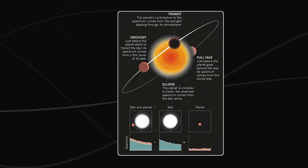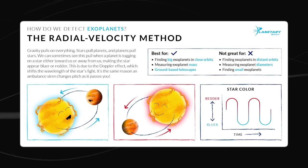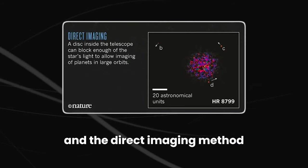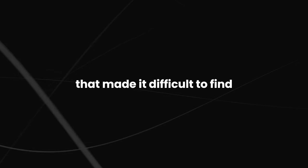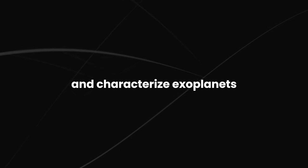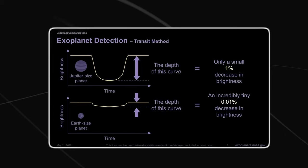These methods included using the transit method, the radial velocity method, and the direct imaging method. However, these methods had limitations that made it difficult to find and characterize exoplanets.